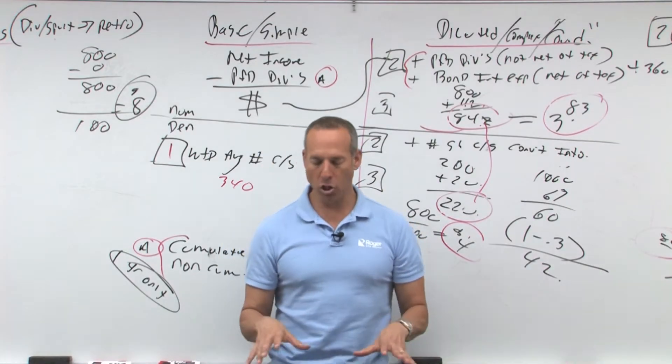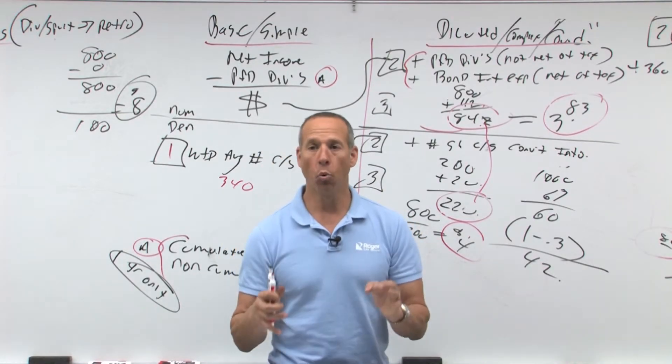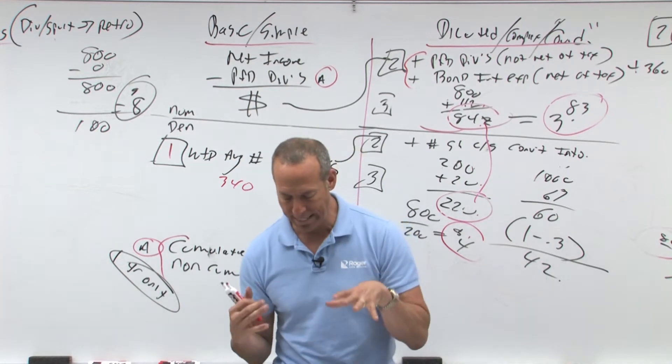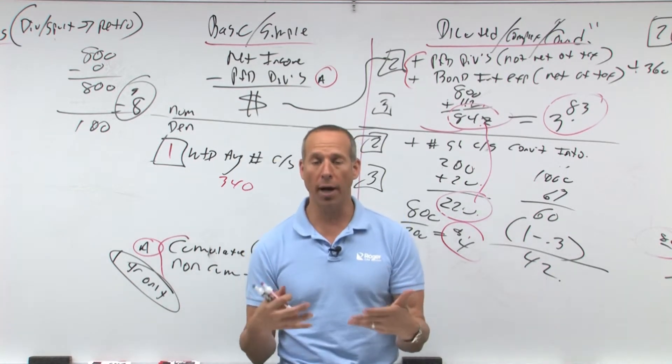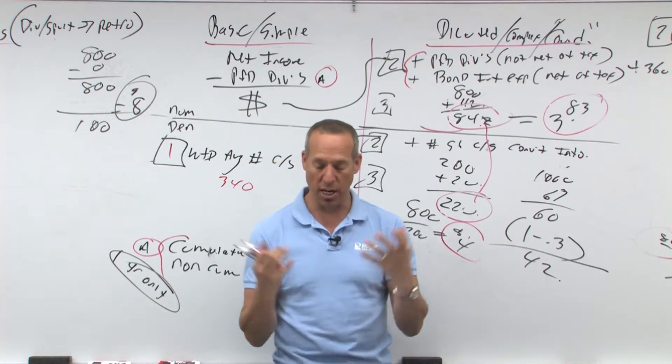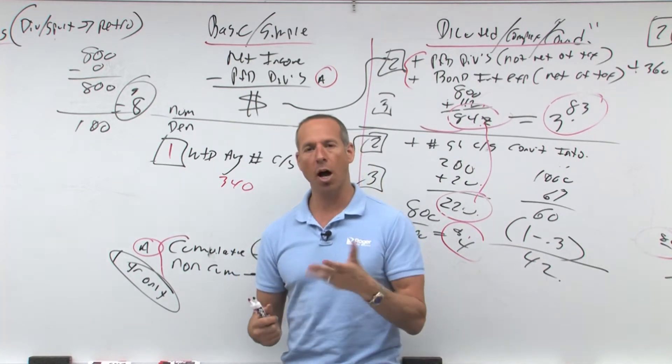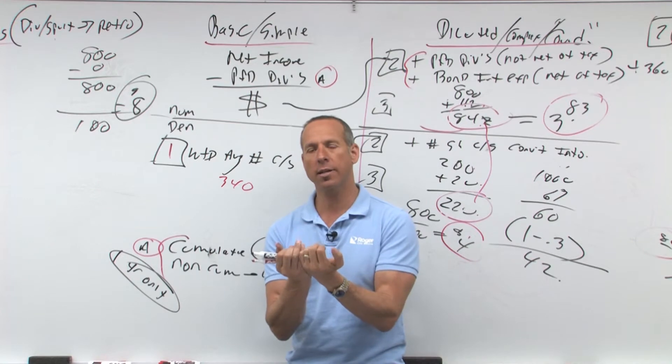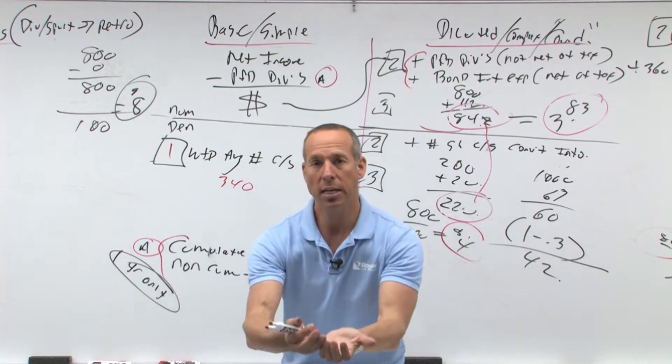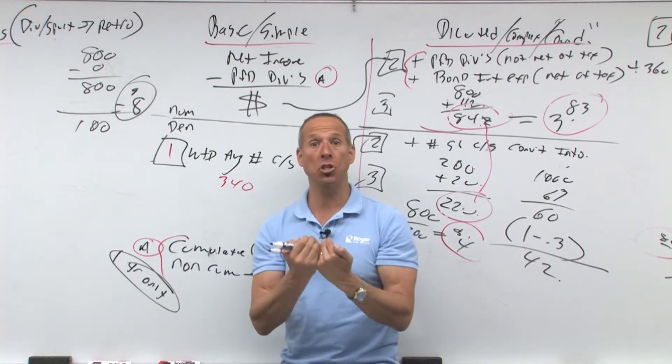Okay, the third thing I want to look at now is called the treasury stock method. So with the treasury stock method, this deals with options, rights, warrants. So this is like a stock option. Let's think about a stock option. If you had a stock option, what happens? Options, warrants, you have these things that allow you to convert it, give money, and get common stock back.